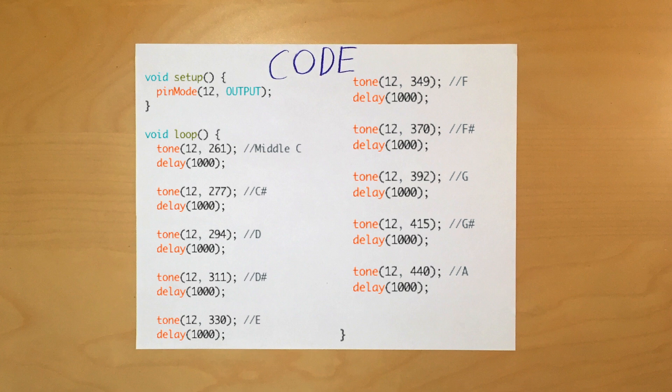Continue this pattern with increasing frequency. I used the notes and corresponding frequencies shown earlier in the video. After you've finished with the code, upload it to your Arduino, and it should sound like this.